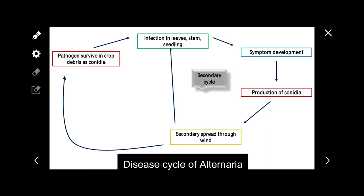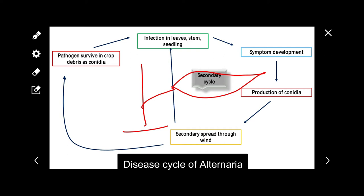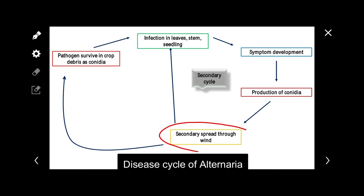Coming to the disease cycle: the pathogen survives in crop debris as conidia. Infection starts on older leaves, symptoms develop, and concentric rings form. Conidia are dispersed by wind to other plants and leaves, causing further infection. After the crop is finished, the cycle continues via surviving conidia.